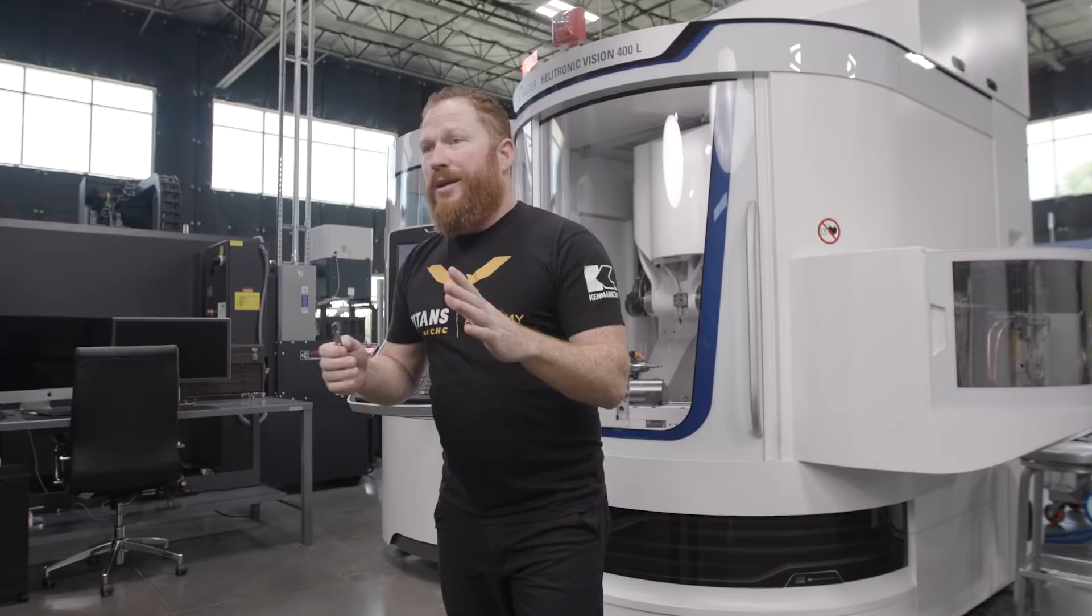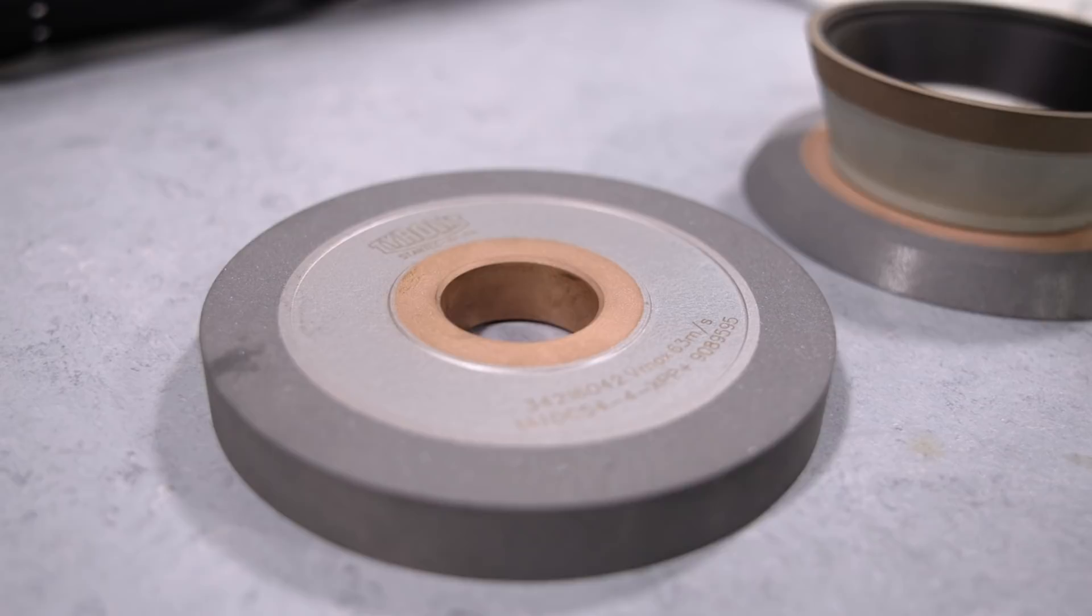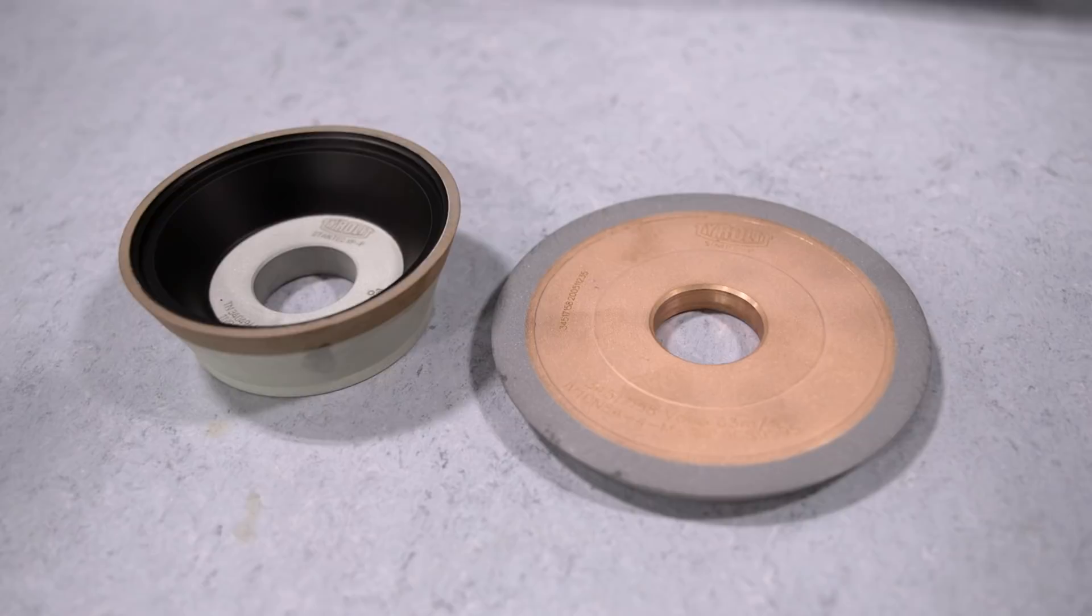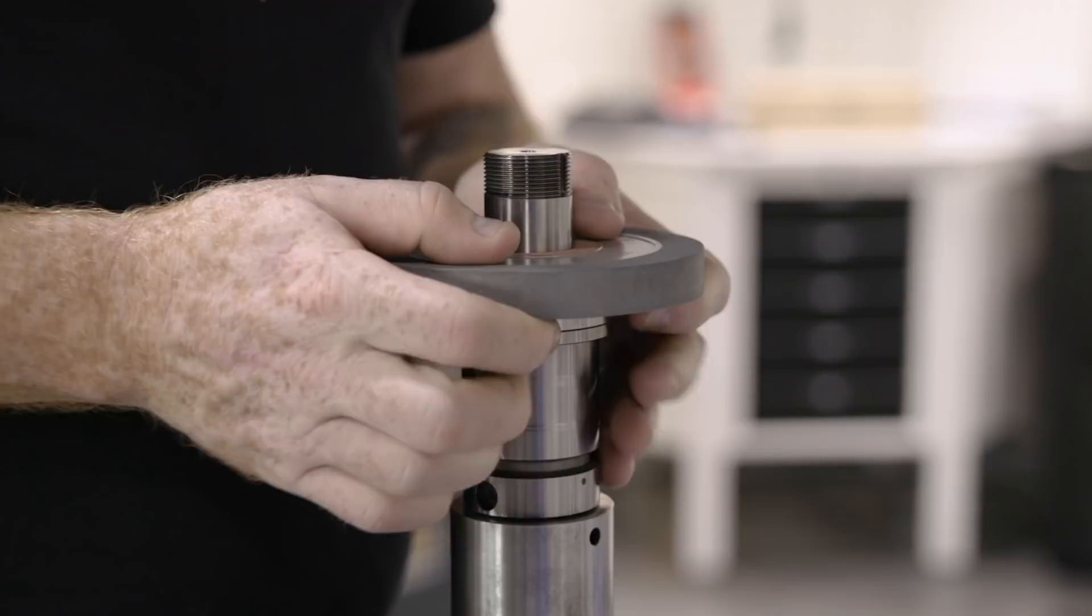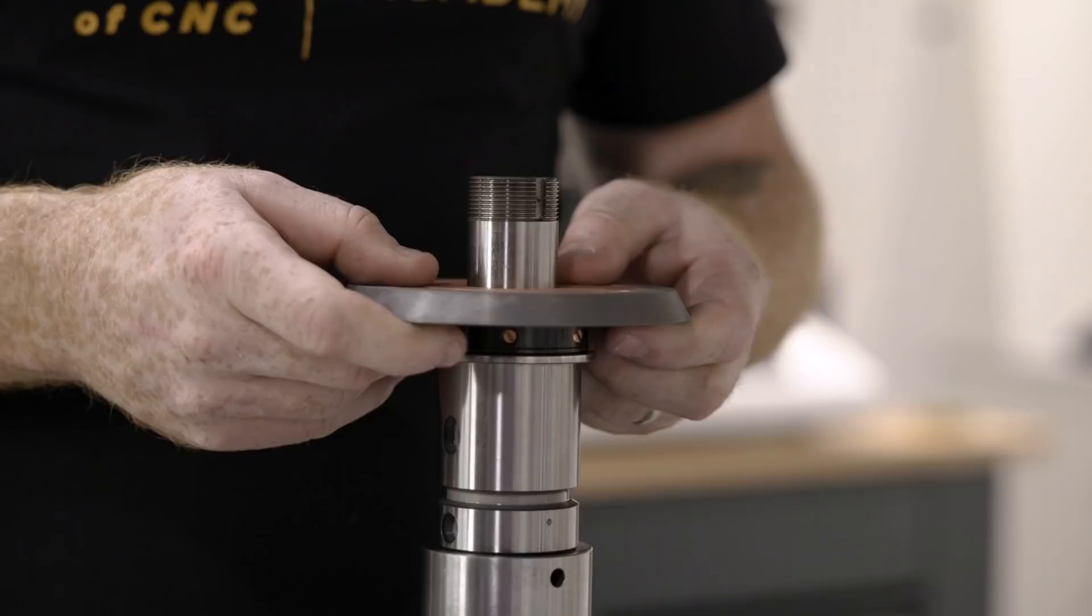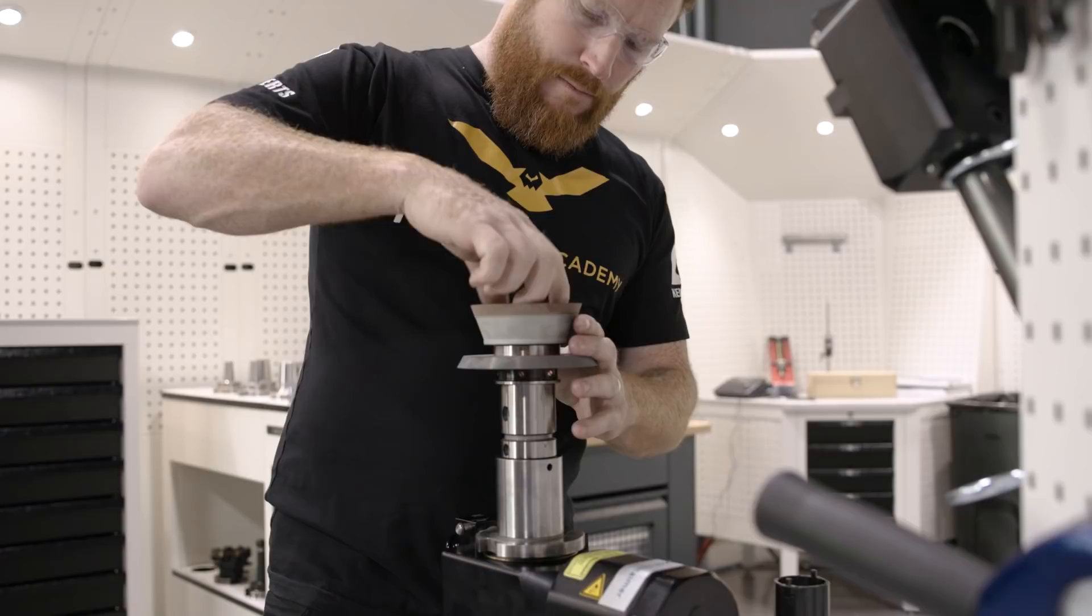Right off the bat, wheel selection. I've got three Tyrolit wheels. Two of them are a D54 and one is a D64. Those are medium grit wheels. We're going to use a 1A1 for our fluting, an 11V9 for the tip of our drill, and a 1V1 for some of the cutting edges on them. We're going to have the 1A1 on one wheel pack, and the 11V9 and 1V1 on a separate wheel pack, and that's all we're going to need to make sure that we get this tool perfect.